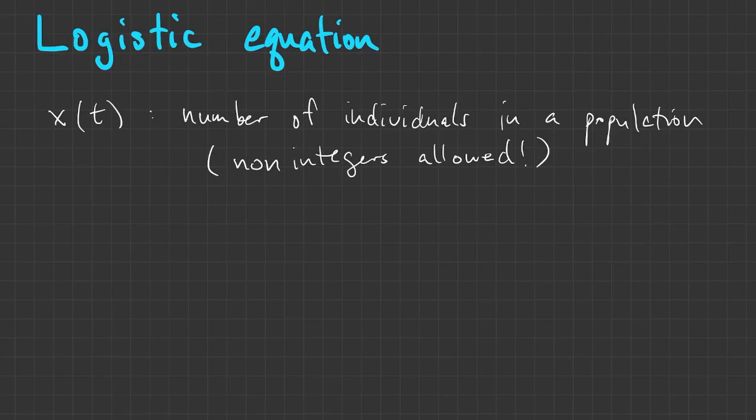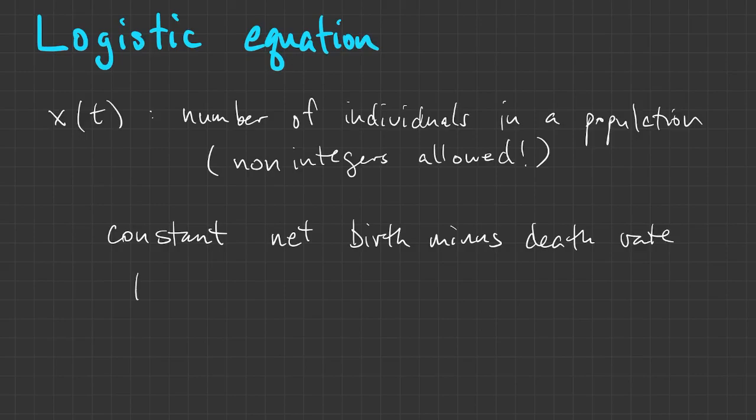The simplest thing to assume is that per individual, there's a constant net rate of birth minus death. That's sort of a net growth rate per capita. And symbolically that means that 1 over x dx/dt is a constant A.